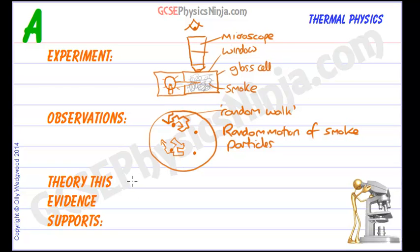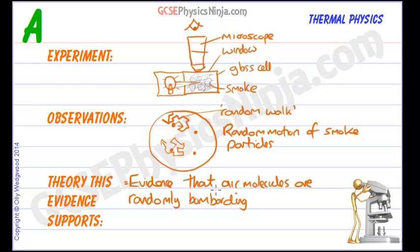Now why should they be going in this strange kind of jaggedy random walk? Why aren't they just moving in straight lines? Well this is evidence that gases, in this case air molecules, evidence that air molecules or particles are randomly bombarding the smoke particles.